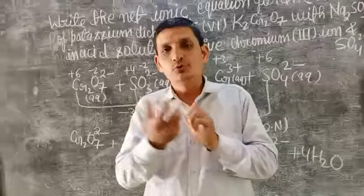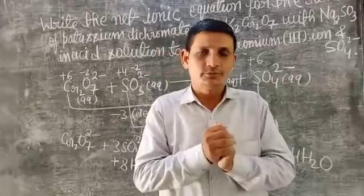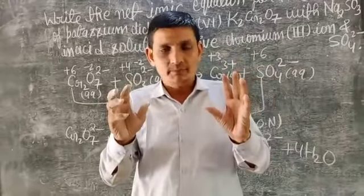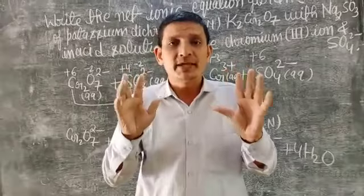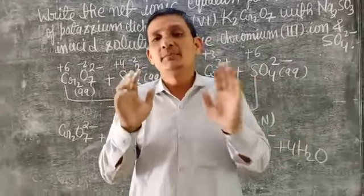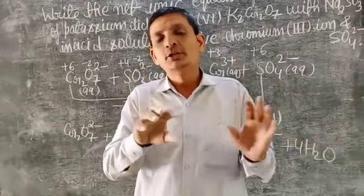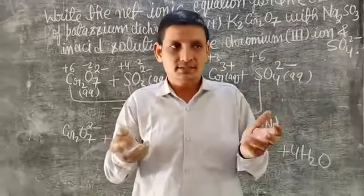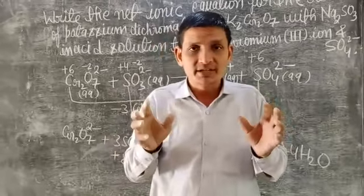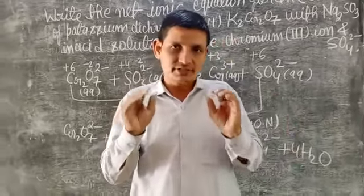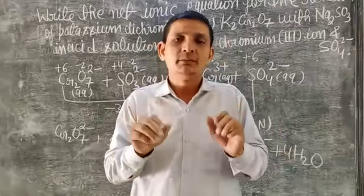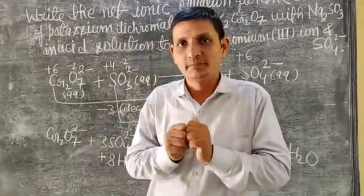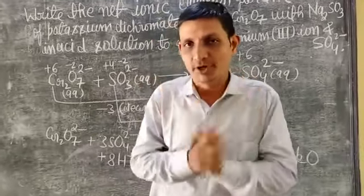Step 5 — to balance hydrogen atoms in acidic medium, use water molecules. These are the key steps, but hard work and practice are very important to learn how to balance a chemical reaction with the help of the oxidation number method. Practice is the main point.